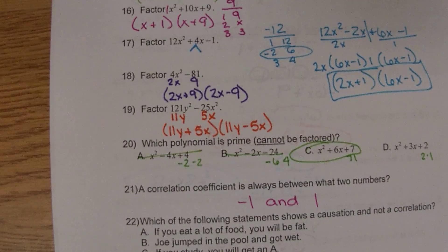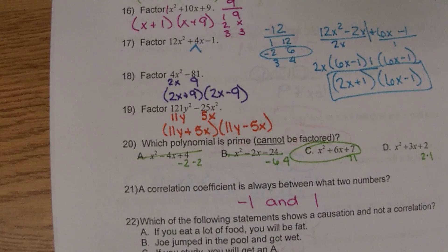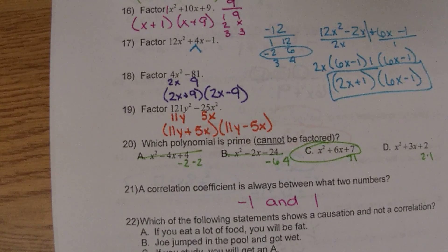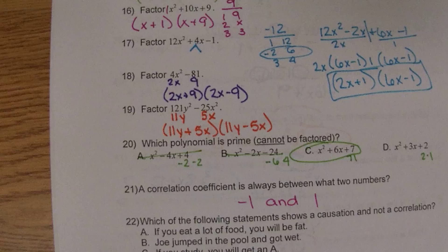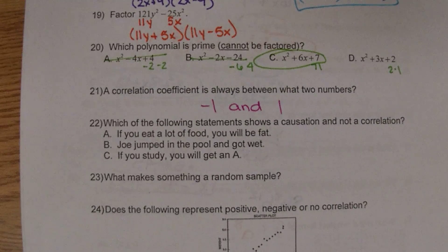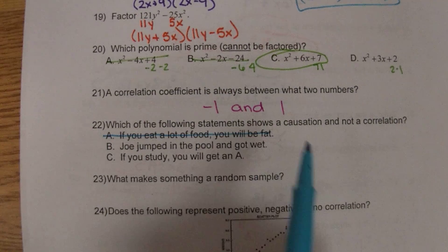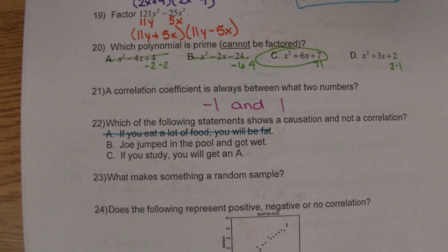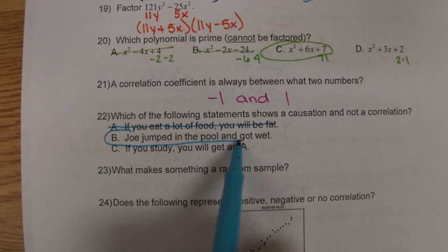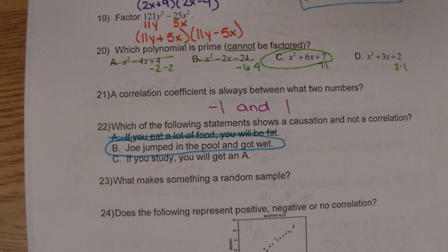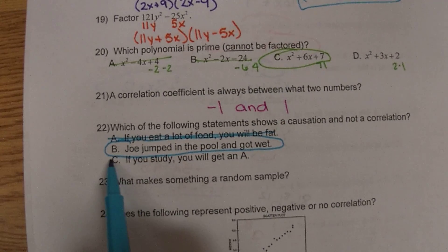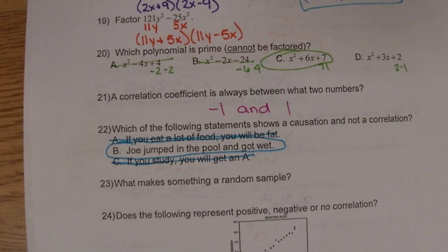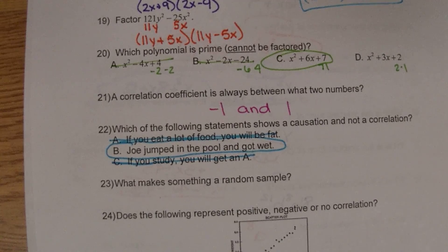22, which of the following statements shows a causation and not a correlation? Causation is a direct cause and effect. So A, if you eat a lot of food, you will get fat. That is not necessarily the case. You could exercise a lot. B, Joe jumped in the pool and got wet. The pool is causing Joe to get wet, so there's cause and effect. If you study, you will get an A. Not necessarily true. We have probably all studied for something and it not gone the way we had hoped.